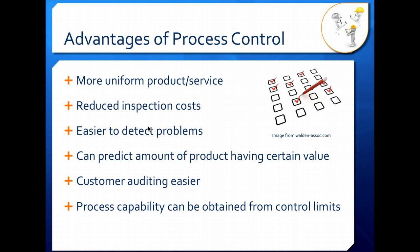You can also predict the amount of product having a certain value or a certain amount of a certain attribute. What this means is that when you know your process is in control, the process value is going to be close to the average value.